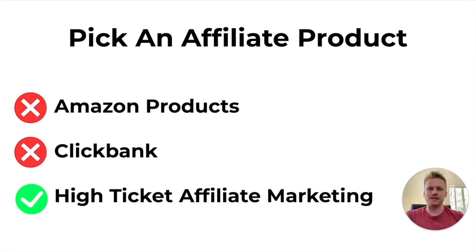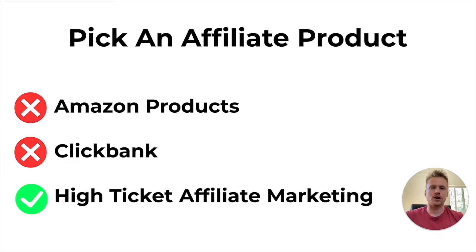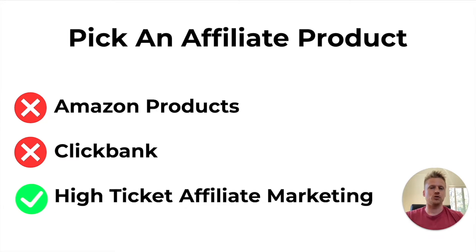There are so many different ways to pick out affiliate marketing products. Some of those include physical products or digital products. You could promote Amazon products as an affiliate marketer on TikTok, and a lot of people do find success with that. However, you're not going to be able to make as much money in the beginning if you start off promoting those low-ticket products, because you're only going to be making a few cents or a couple of dollars for every single item you sell as an Amazon affiliate.